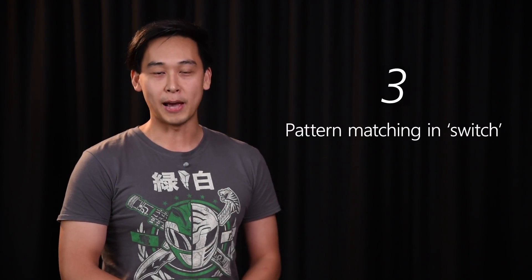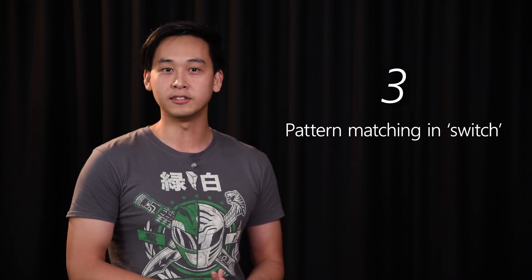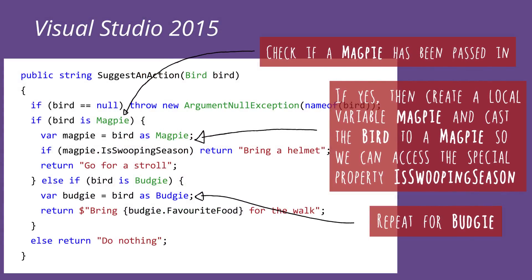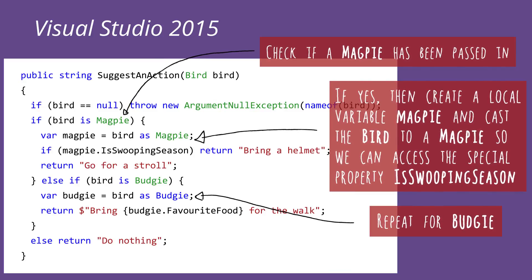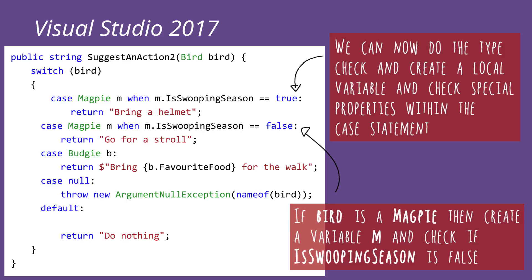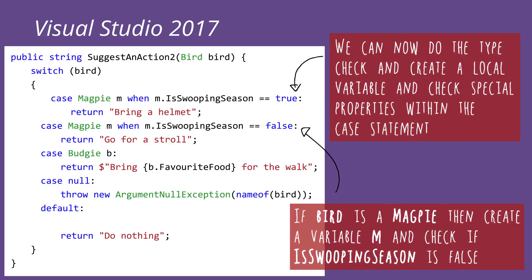My third favorite feature is pattern matching. As a developer, when you're working with classes and derived classes being passed as a variable to a function, sometimes you need to check which derived class it is. Previously you needed to use if-statements to check the type, then cast it and declare a local variable to access its properties — making your code quite verbose. With C# 7 you can do all of this inside a switch statement: you just say switch on the variable, case derived class A, and then start accessing its properties directly. It gets rid of all those if-statements and local variable declarations.